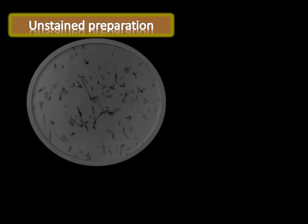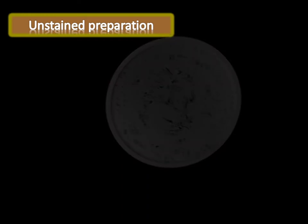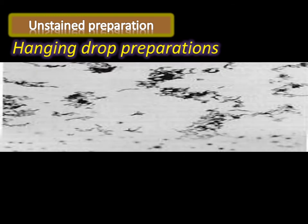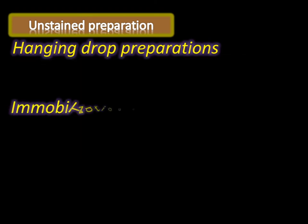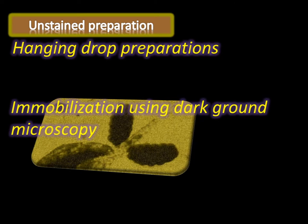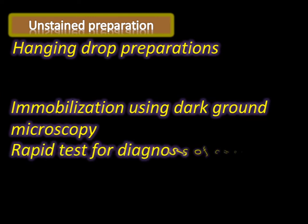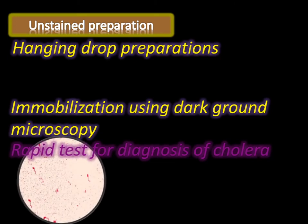Under microscopy, unstained preparations include hanging drop preparations, used to test motility of the organism. The active darting motility is seen under hanging drop preparations. Additionally, there is an immobilization test using dark ground microscopy: one drop of liquid stool is placed on a slide and observed for motility. If darting motility is seen, one drop of specific anti-serum is added. If motility is inhibited after adding the anti-serum, the test is positive. This is a rapid test for diagnosis of cholera.